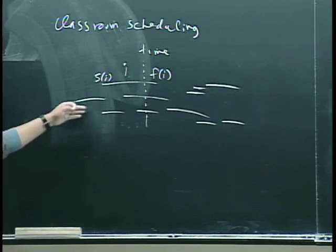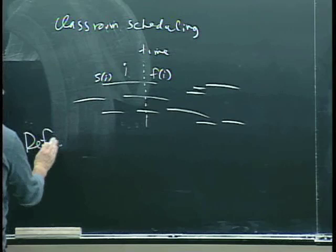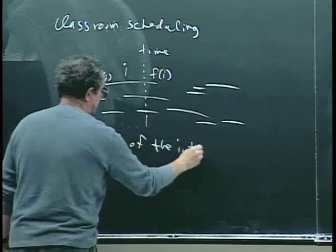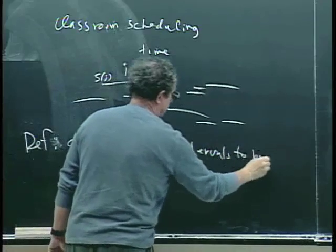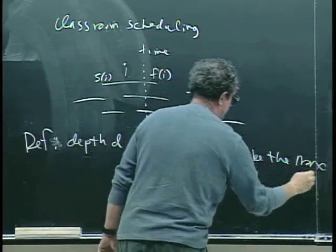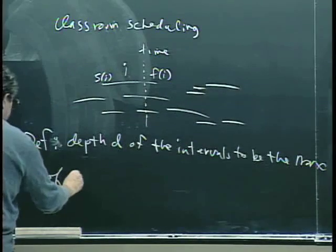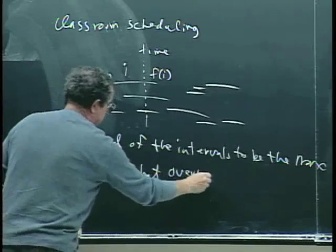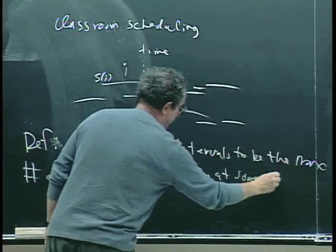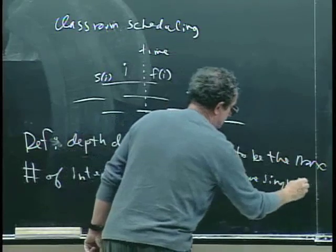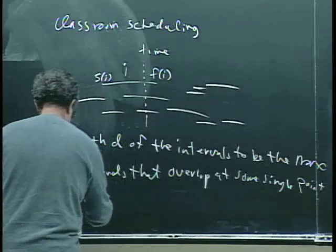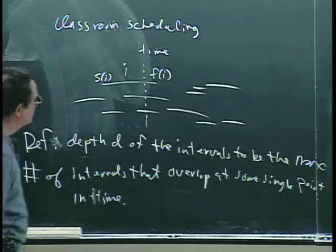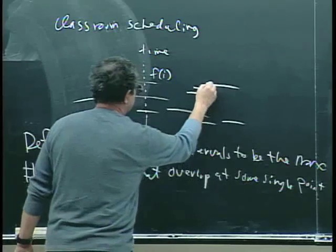So we can define the depth D of the intervals to be the maximum number of intervals that overlap at some single point in time. So if you just look at this, I think it's, depending on whether we think these two overlap or not, let's just extend that a bit to make it clearer.